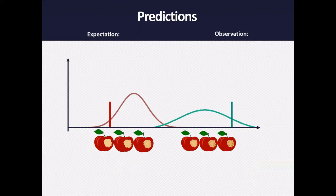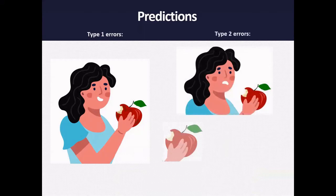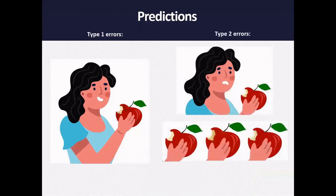If that criterion is inappropriate, or if you systematically misjudge the size of your prediction error, then this may result in a shift in the balance between type 1 and type 2 errors. Either people get too laid back and fail to notice when things change, or they keep being surprised by mere random fluctuations.